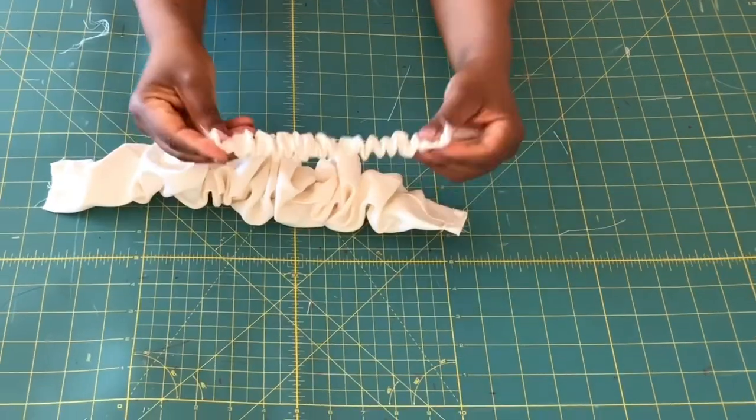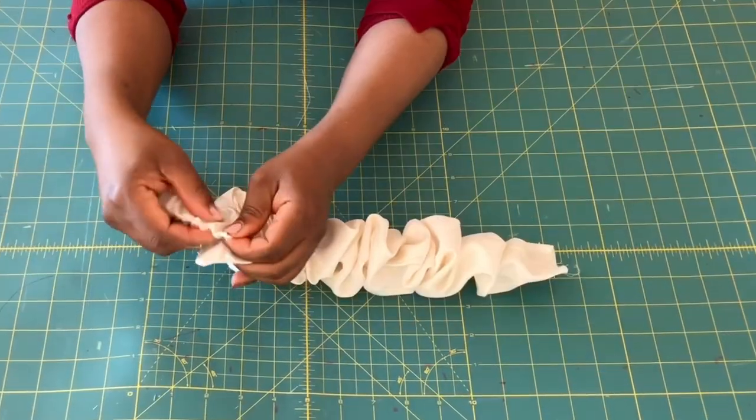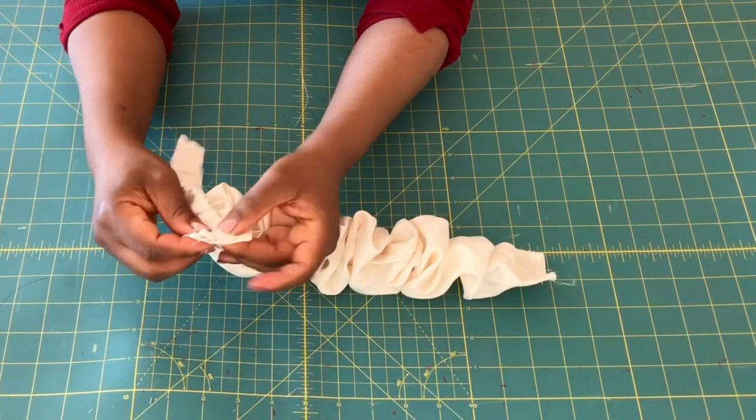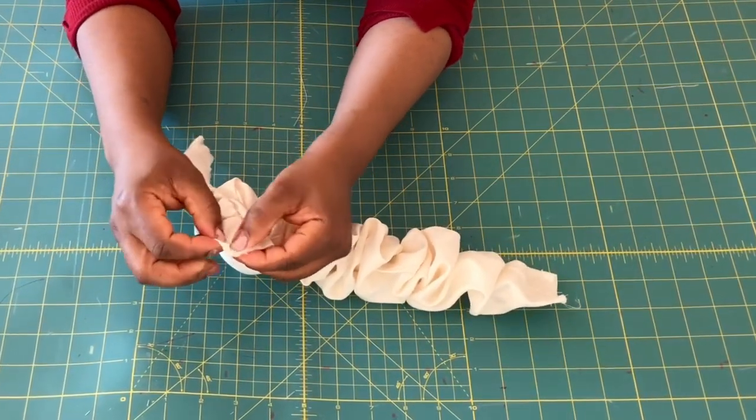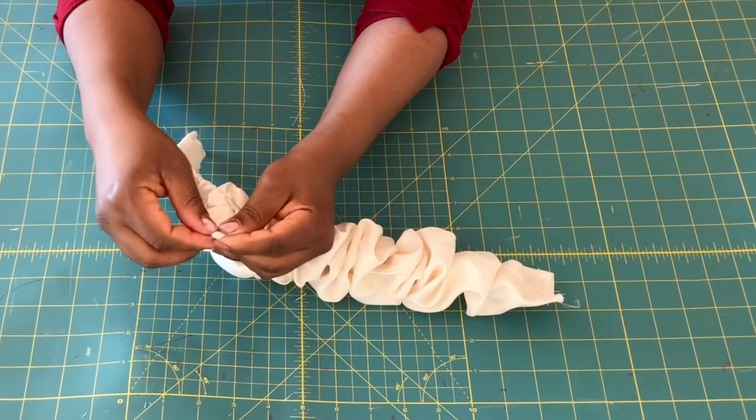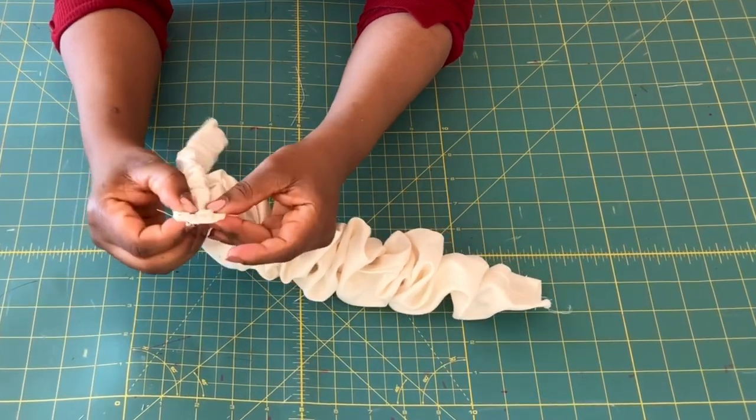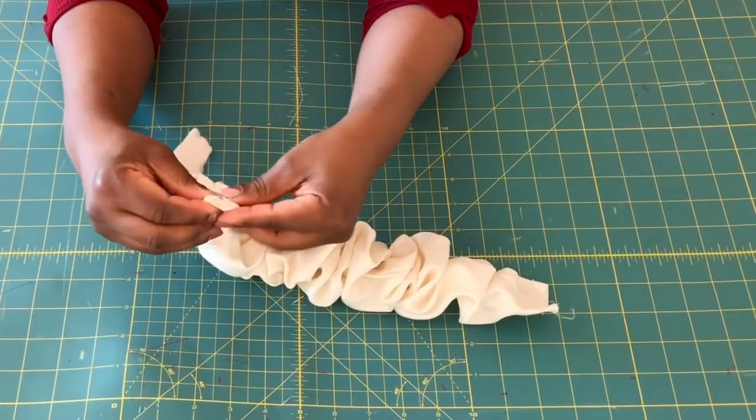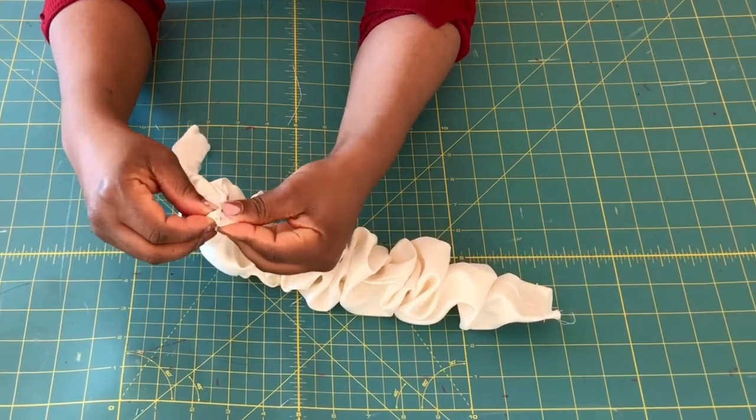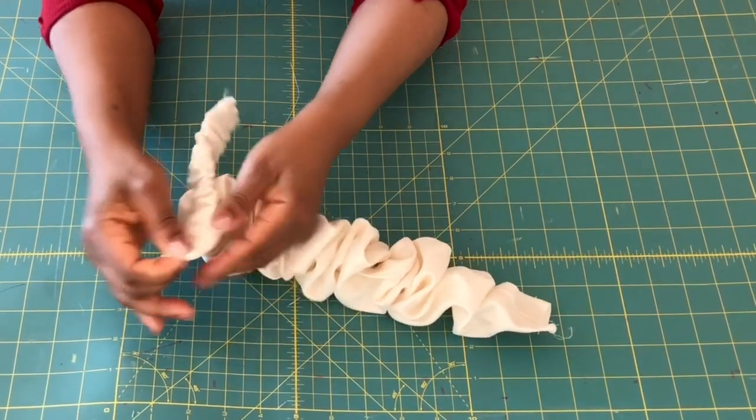Now grab your elastic casing and place the right side of the elastic casing to the right side of the main fabric at the center. The elastic casing should be at the middle of the main fabric. Then you're going to close it in and secure it with a pin. Do the same for the other end as well.